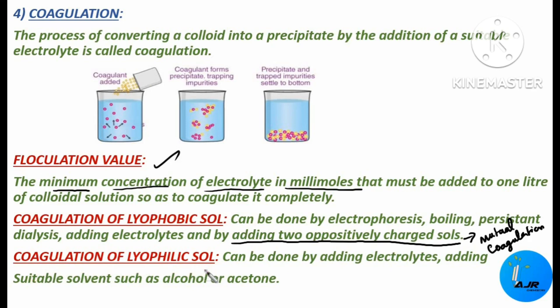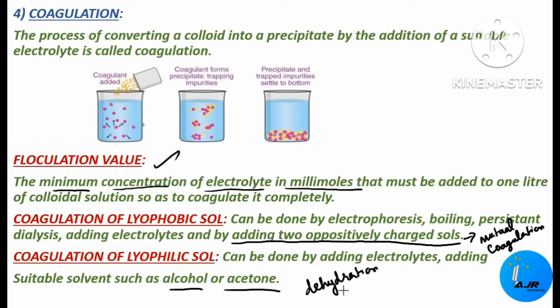The next method is coagulation of lyophilic sols. It can be done by adding electrolytes or by adding suitable solvents such as alcohols or acetone. When alcohol or acetone is added to the lyophilic sols, dehydration of the dispersed phase occurs. Under this condition, even a small quantity of electrolyte can bring about coagulation.